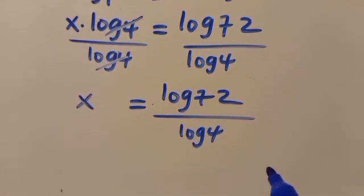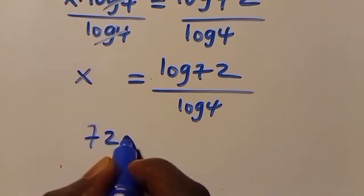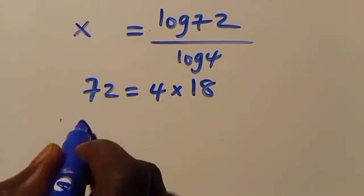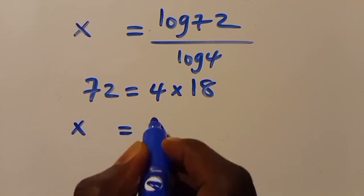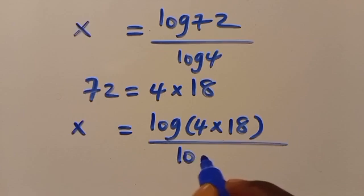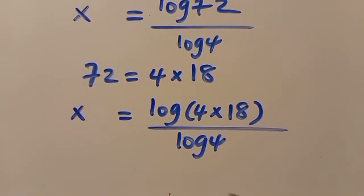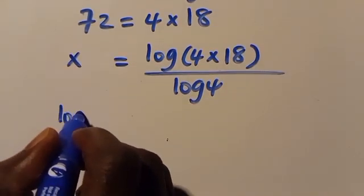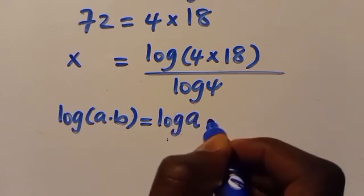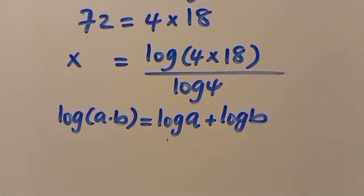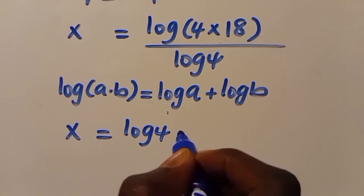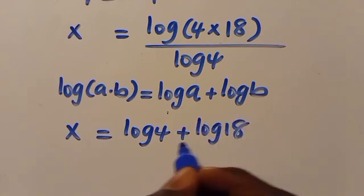We can have 72 as the product of 4 times 18. Substituting, we have x equals log(4 times 18) over log 4. Recalling that log(a times b) equals log a plus log b, we expand to get x equals (log 4 plus log 18) over log 4.